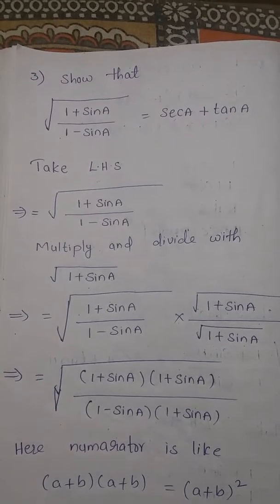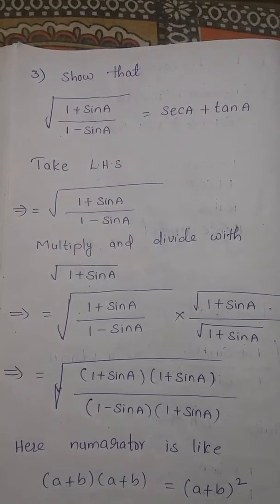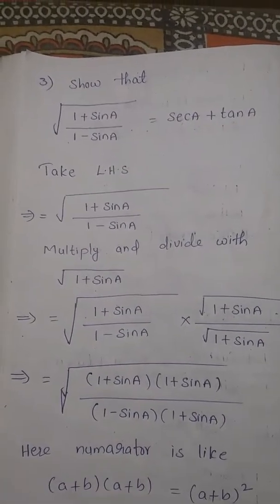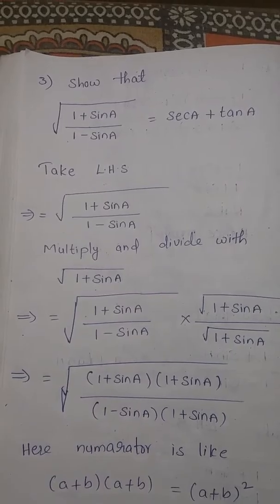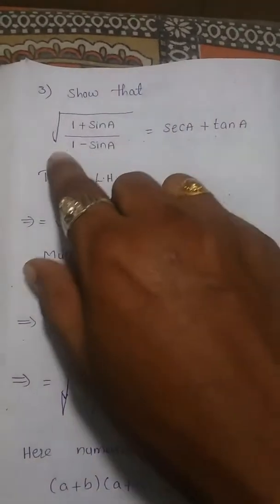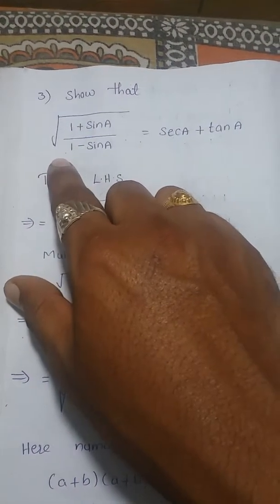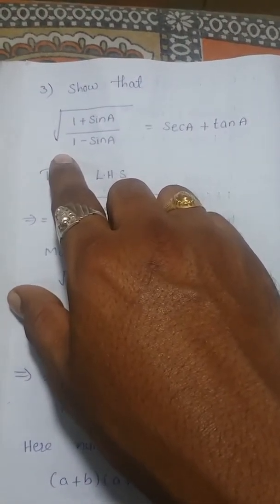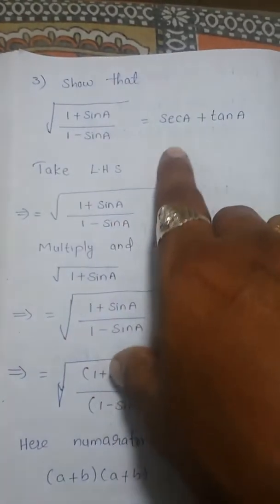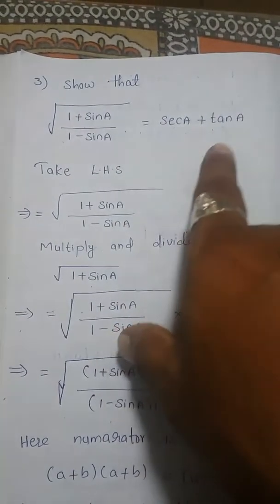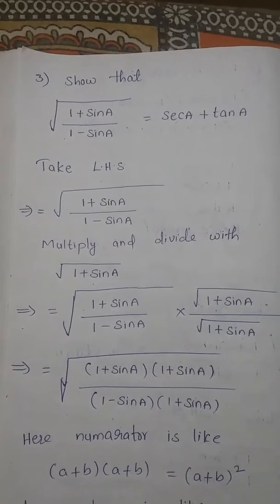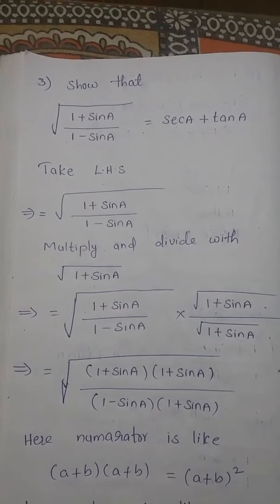Question number 3, page number 292, exercise number 11.4, trigonometry. Show that √((1+sinA)/(1-sinA)) is equal to secA plus tanA. This is the question we need to prove.